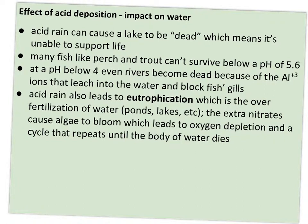The impact on water is significant: acid rain can cause a lake to become dead, meaning unable to support life. Fish like perch and trout are more sensitive than bottom feeders, and they cannot survive below a pH of 5.6. Whenever acid rain drops a lake's pH below 5.6, various species begin dying off. At a pH below 4, even rivers become dead because of the high amount of aluminum that leaches into the water from rocks in the riverbed — that aluminum not only kills plants but blocks fish's gills, preventing them from taking up oxygen.